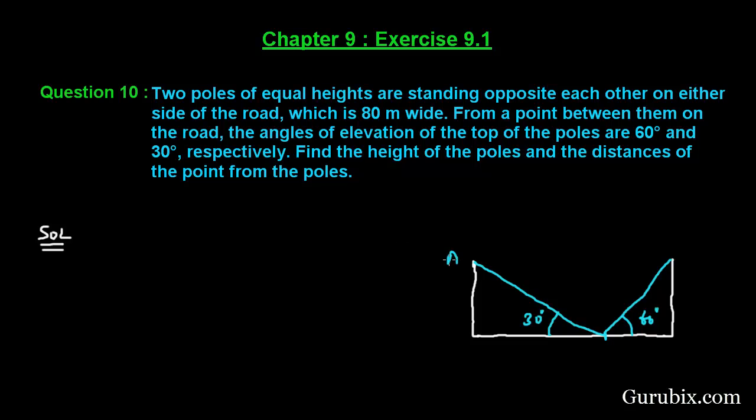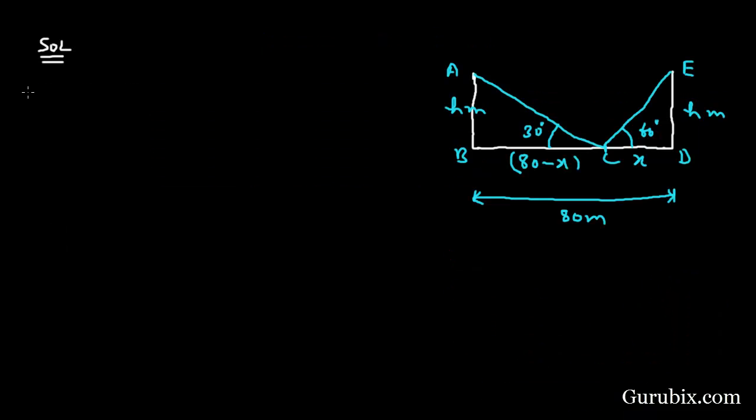So suppose this is point A, this is point B, this is C, this is D, and this is point E. Let the height of the poles be h meters, and we are also given the width of the road is 80 meters. So if we suppose this distance is x, therefore this distance will be 80 minus x.